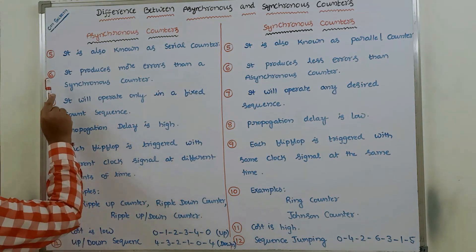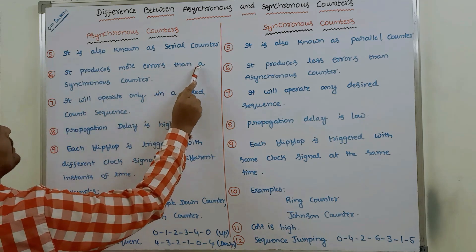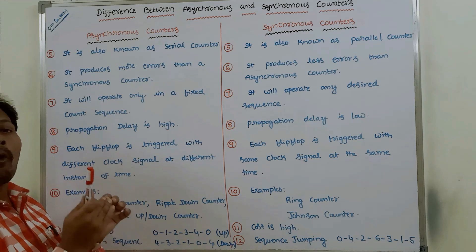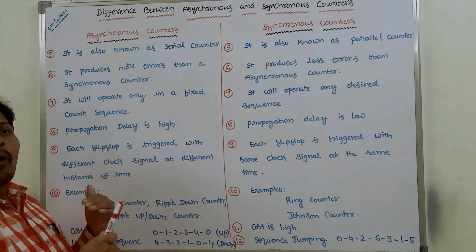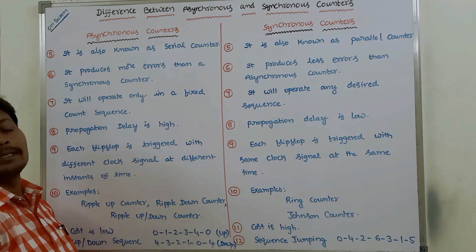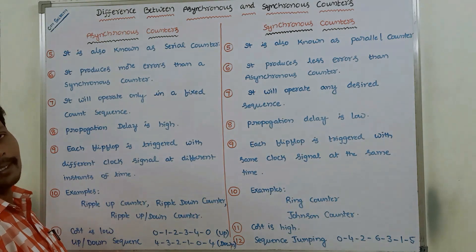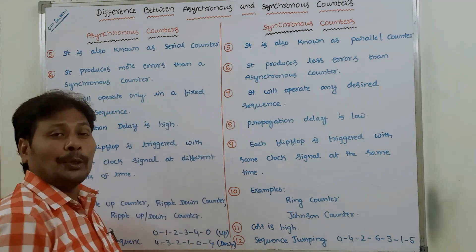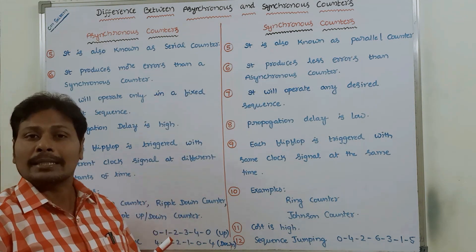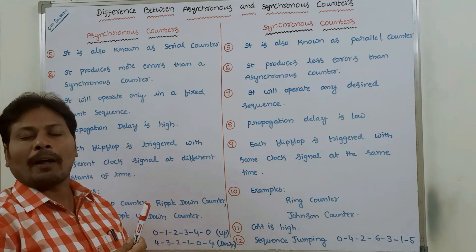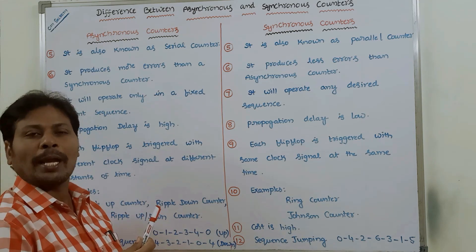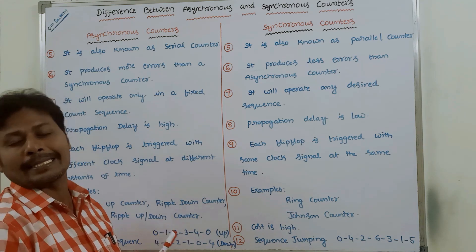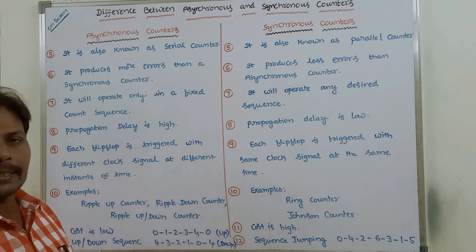Sixth point: asynchronous counters produce more errors than synchronous counters, because the clock pulse is given to all flip-flops at different times and they operate at different times. In synchronous counters, the clock pulse is given to all flip-flops at the same time, so they operate simultaneously, resulting in fewer errors.